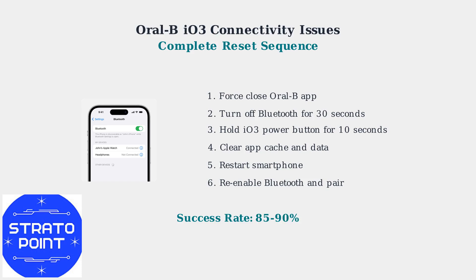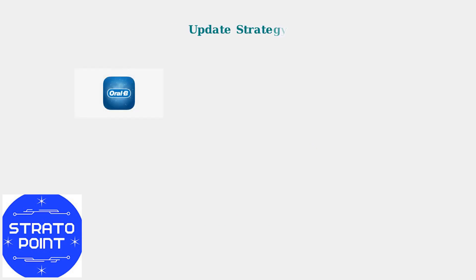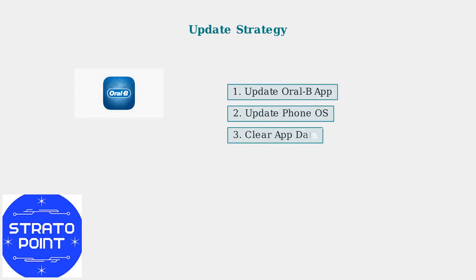This complete reset sequence has a success rate of 85 to 90 percent for resolving connectivity issues with the Oral-B IO3 toothbrush. When basic troubleshooting fails, the next step involves systematic updates. Both your Oral-B app and smartphone operating system must be running the latest versions for optimal connectivity.